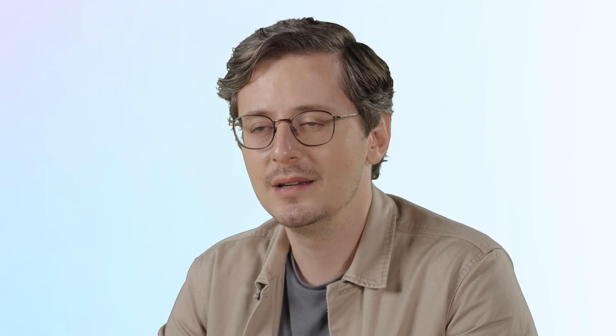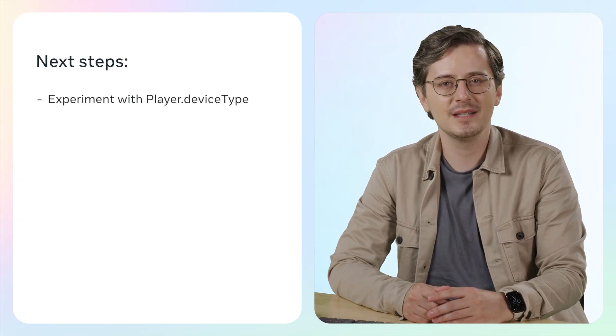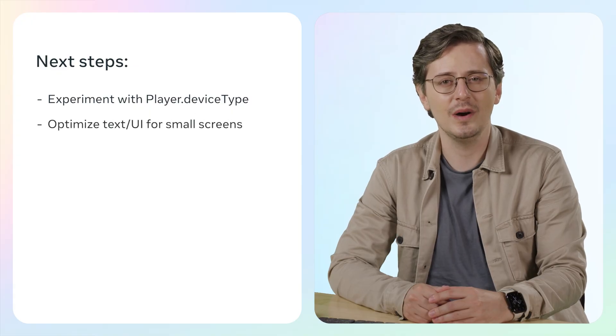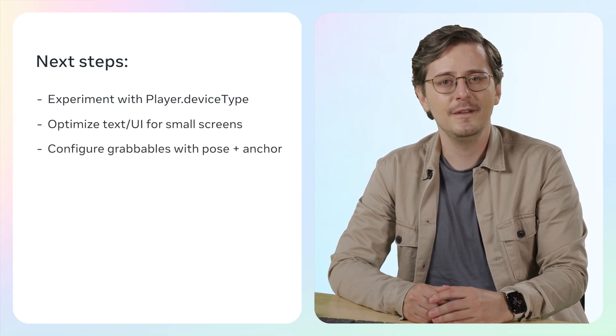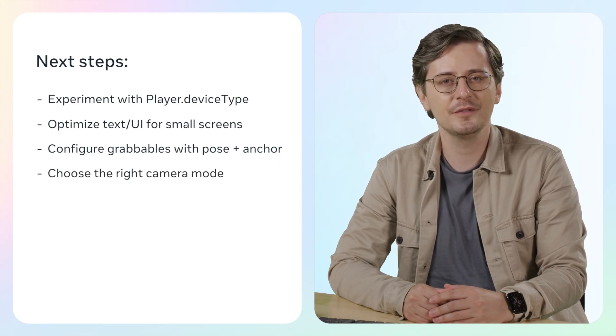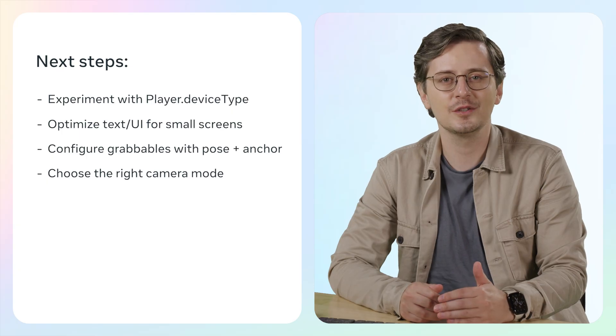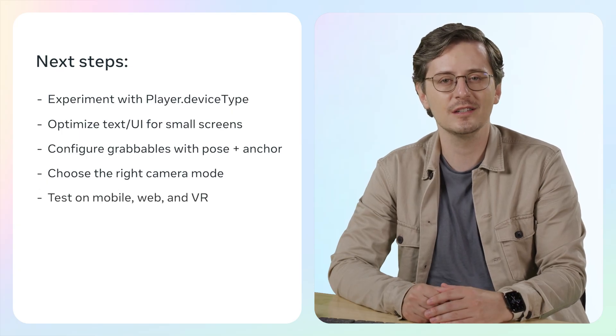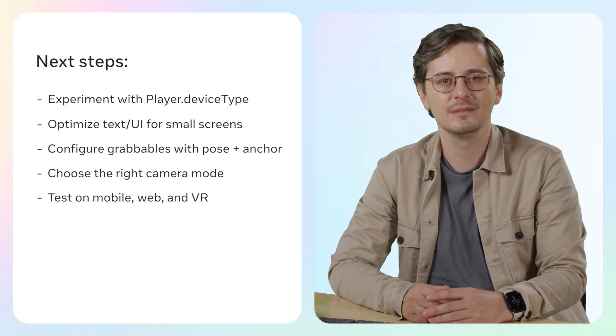So you've learned some essential best practices for mobile and web development. Here's what to do next: start experimenting with the device type API for platform-specific interactions, optimize your text and UI for small screens, configure grabbable objects with avatar poses and grab anchors, and test different camera modes to enhance the player experience. As you apply these techniques, remember to test your world on various devices to ensure compatibility and optimal performance. Ready to build mobile-friendly worlds? Check the description for additional resources. Now go create something amazing and we'll see you in the next video.